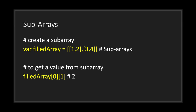In GDScript you can put arrays inside an array — these are called sub-arrays. Depending on how many layers there are, they may also be called two-dimensional or three-dimensional arrays. To create a sub-array, use square brackets inside another pair of square brackets. To retrieve a specific value from a sub-array, you use a second pair of brackets to declare the index position within the inner array. For example, index position one in the inner array would return the number two.